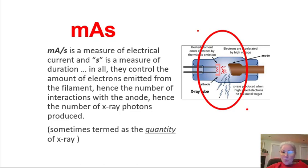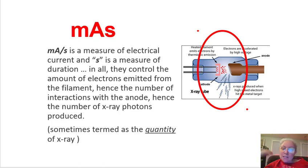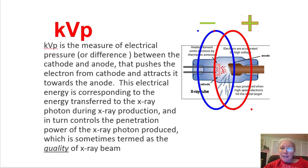mA — milliamperage — is the quantity. This slide shows milliamperage per unit of time; the 's' is a measure of duration. mA controls the amount of electrons bubbled off the filament, hence the number of interactions with the anode, and hence the number of x-ray photons produced. So milliamperage is termed the quantity of x-rays produced.